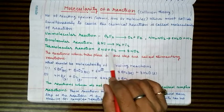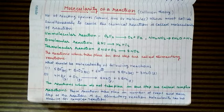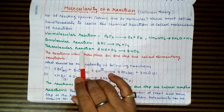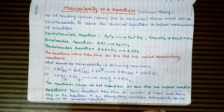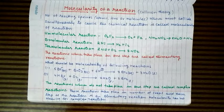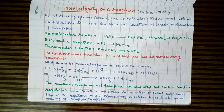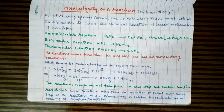The molecularity cannot exceed the value three. This can be compared by analogy: it is impossible that more than three vehicles can collide simultaneously during an accident. More often, accidents take place between two vehicles, and rarely between three vehicles. The number of vehicles colliding at the same place at the same time cannot exceed three. Similarly, molecules colliding simultaneously during a chemical reaction can be one, two, or rarely three, but cannot exceed three.